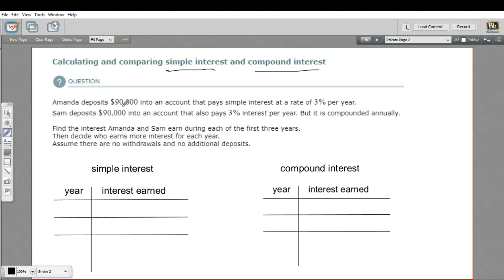So this money, the bank is going to give Amanda a little bit of return on that money as long as she keeps it in that account. That's what interest is. Sam deposits $90,000, so the same amount, into an account that also pays 3%, so the rates are the same, but it's compounded annually. And we want to find the interest for each of them during the first three years and decide who earns more interest.